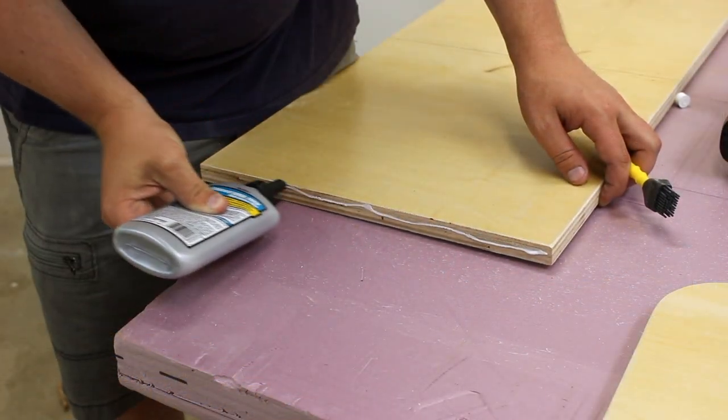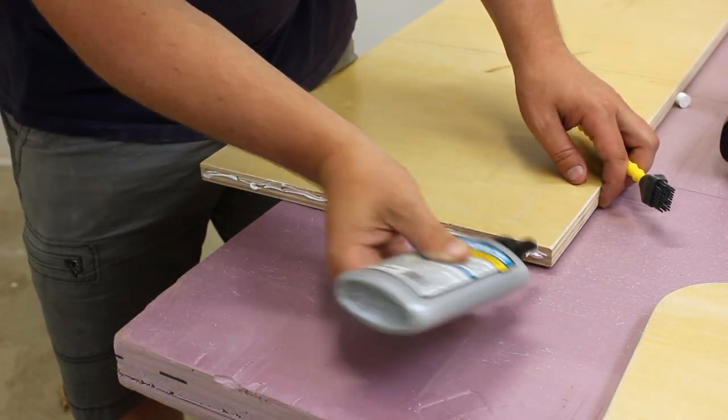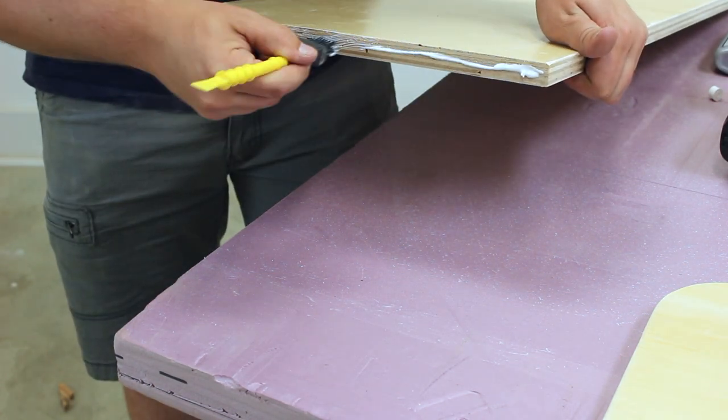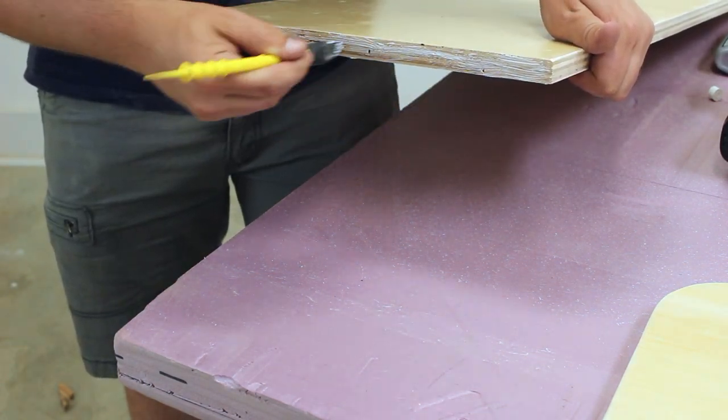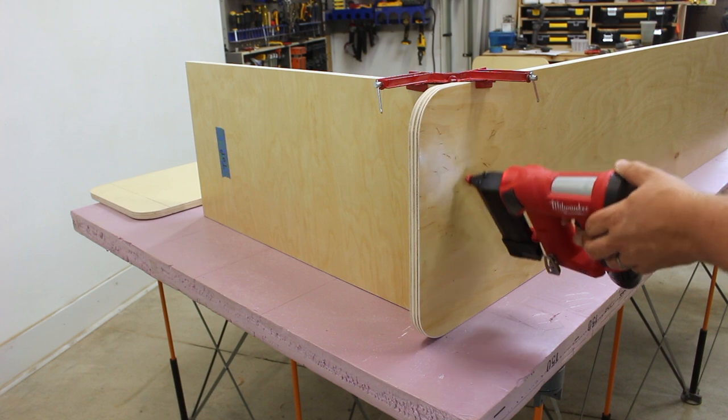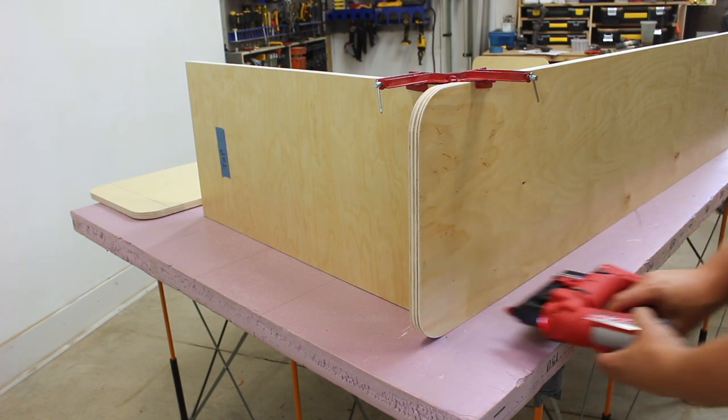We're going to start by joining the top to the two sides. Make sure you put a healthy amount of glue on here because that's what's going to be doing most of the holding in these joints. We're going to hold it in place with a couple of pin nails while the glue dries.